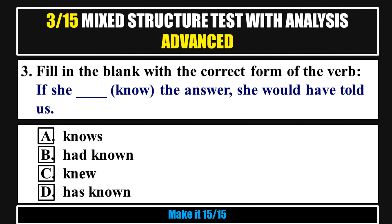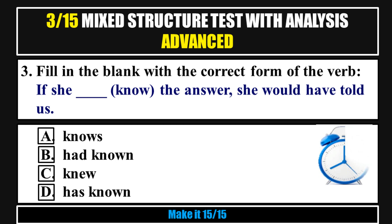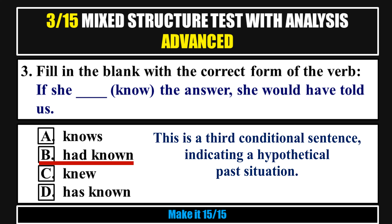Question 3. Fill in the blank with the correct form of the verb: 'If she ___ the answer, she would have told us.' Options: a. Knows, b. Had known, c. Knew, d. Has known. Answer: Had known. Analysis: This is a third conditional sentence indicating a hypothetical past situation.